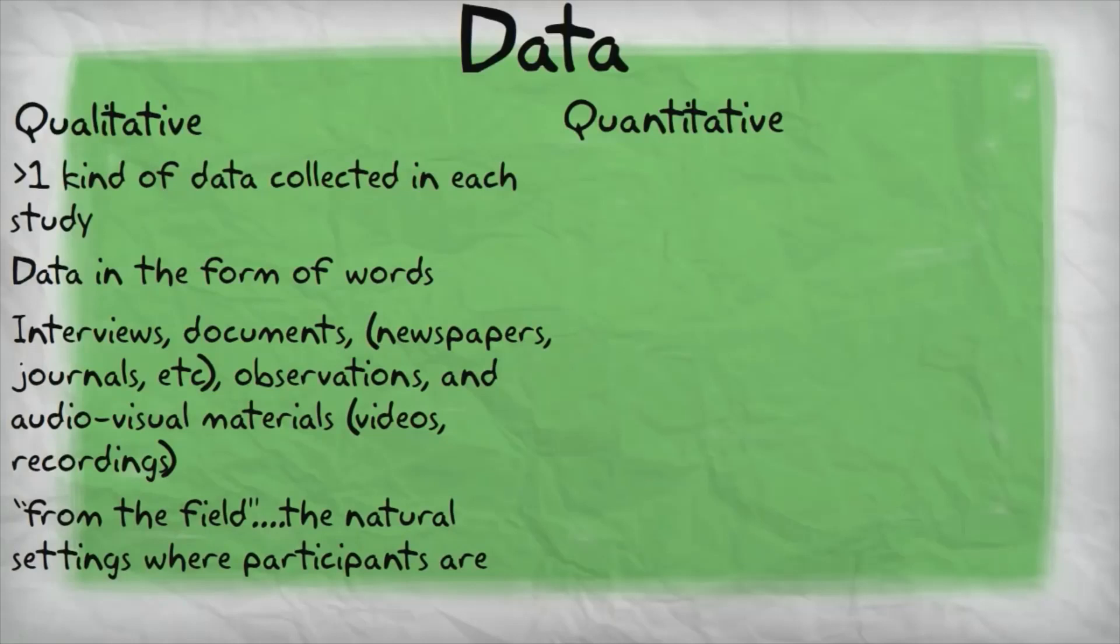It's also important to note that surveys or questionnaires are also known as instruments. Well, in qualitative research, there are no instruments, no surveys. In qualitative research, the researcher is the instrument. What this means is that the researcher acts as an instrument. The researcher is kind of like a living survey. They ask all the questions and make observations instead of relying on surveys to gather data.